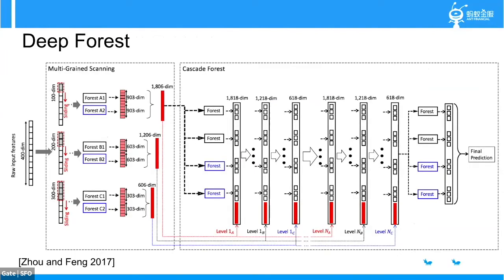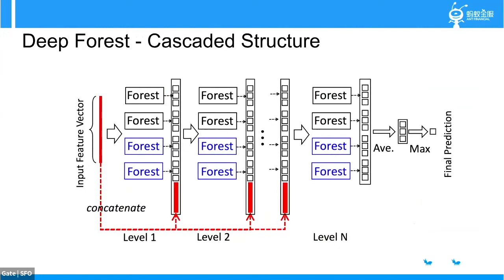Now, Deep Forest. Here's the graph from the original paper, proposed by Joanne Fung in 2017. The first layer is multi-grain scanning, which is for processing images or sequence data — that's not the focus here. We will be focusing on the cascaded structure shown on the right. Here is the cascaded structure: imagine we have an input dataset with 100 features — that's the original input feature vector.